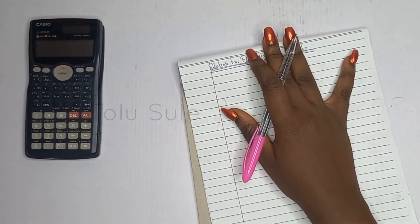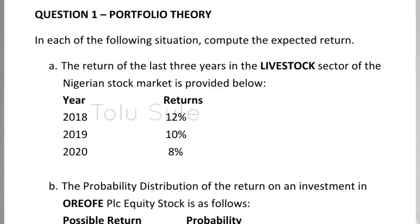Let's read the question on screen. It says: in each of the following situations, compute the expected return. Three situations are given. Situation A says the return of the last three years in the livestock sector of the Nigerian Stock Market is provided — you have 2018, 2019, and 2020. This is historical data.